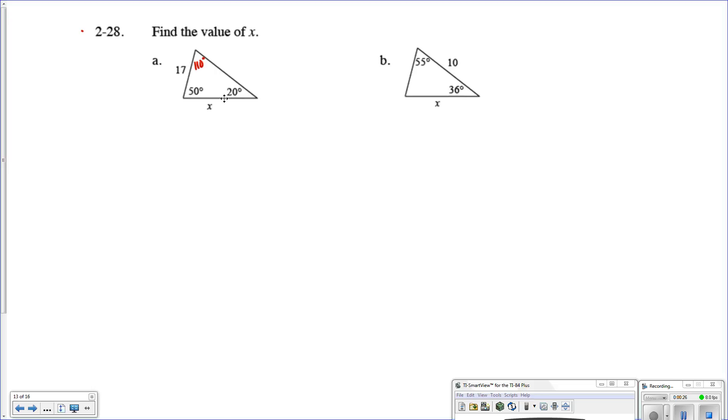It's not drawn to scale, so I wouldn't worry much about that. But what we're going to look to do here is we're trying to figure out the value of x. We know the angle across from it, and then we also know another angle and the side length of the side across from it.